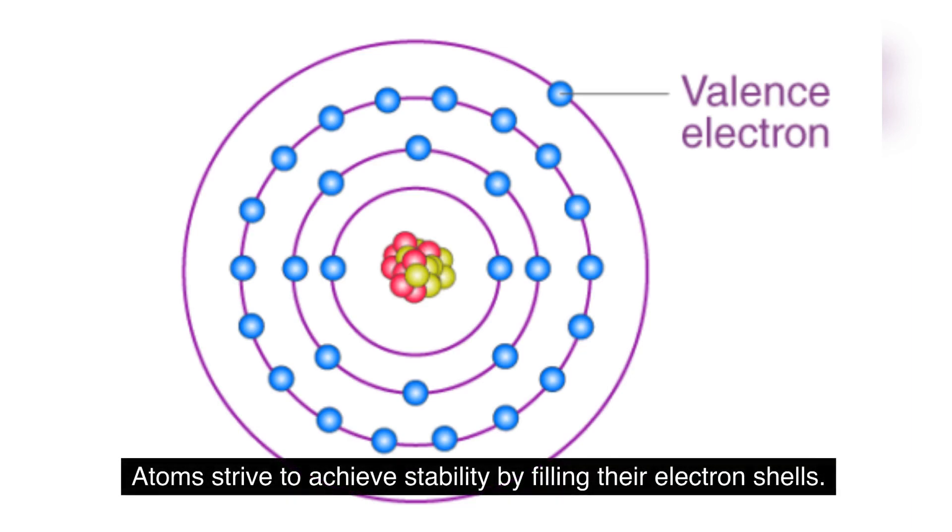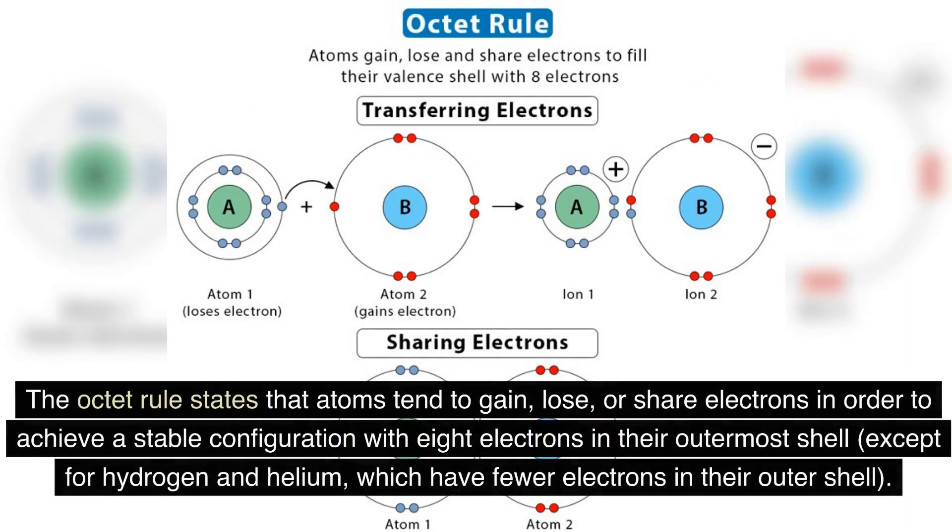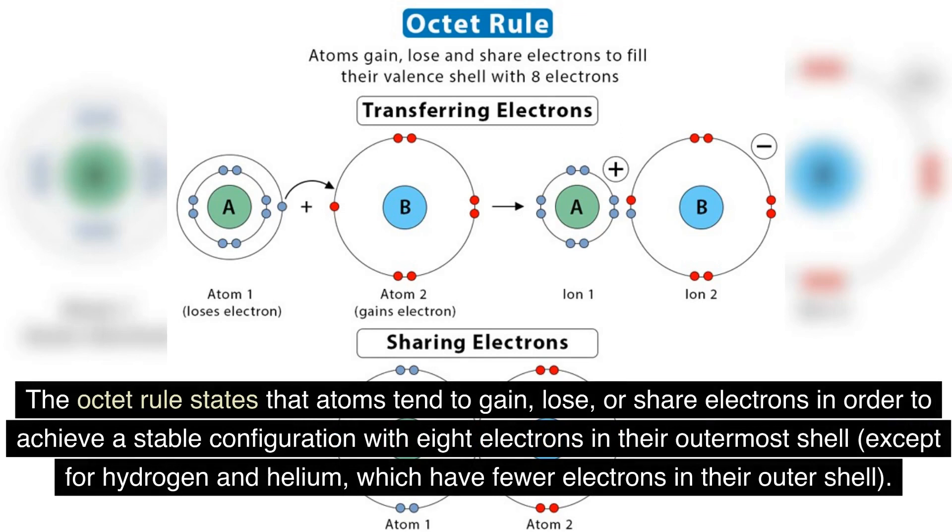Atoms strive to achieve stability by filling their electron shells. The octet rule states that atoms tend to gain, lose, or share electrons in order to achieve a stable configuration with eight electrons in their outermost shell, except for hydrogen and helium, which have fewer electrons in their outer shell.